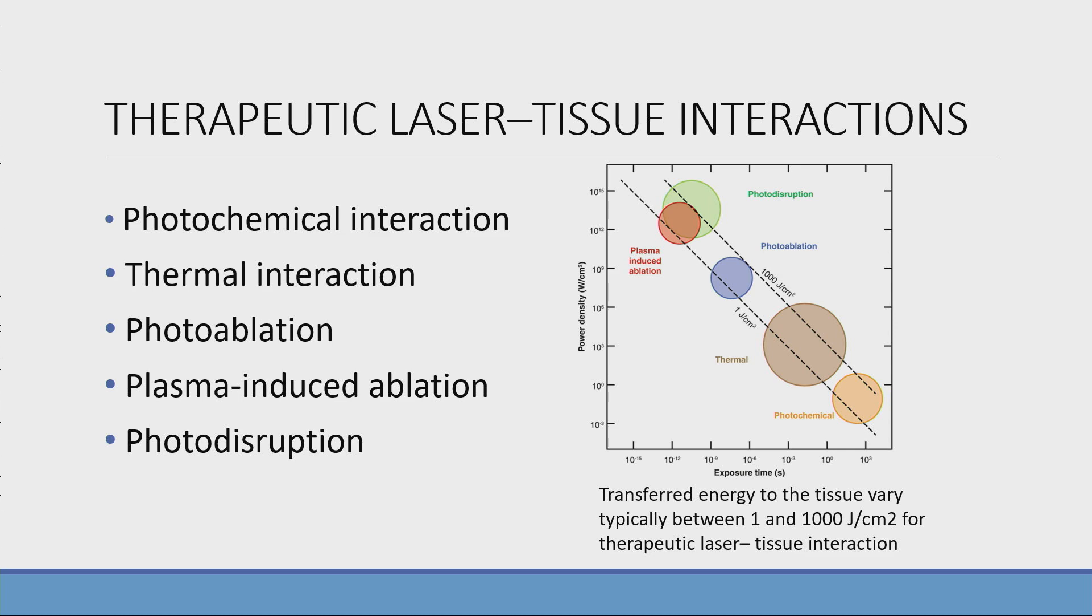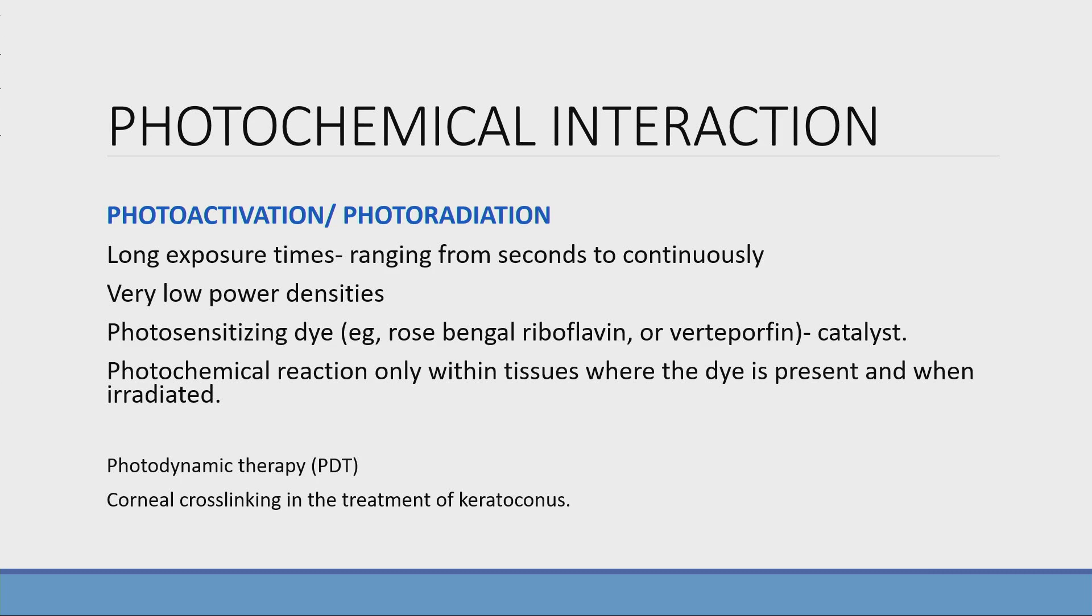All these tissue interactions that transfer energy to the tissue is between 1 and 1000 joules per centimeter square. First is photochemical interaction. Here, we use a catalyst, usually a dye like riboflavin or verteporfin.